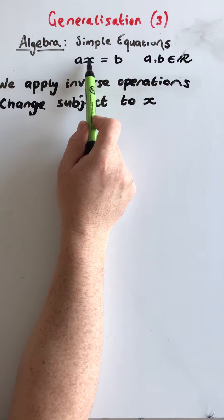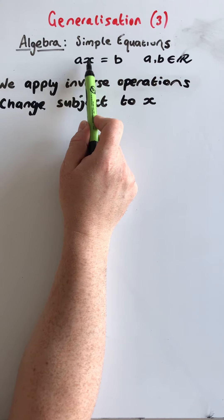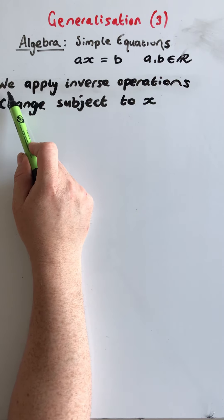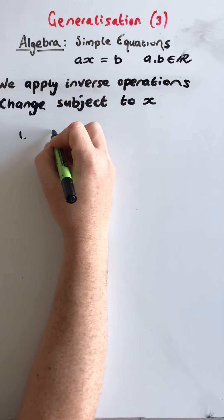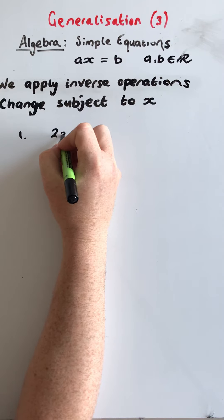We are going to change the subject to x to have it on its own and to do this we are going to apply inverse operations. So a wee recap of a question you may have seen already.